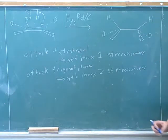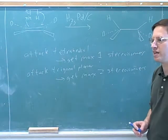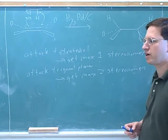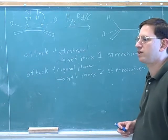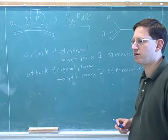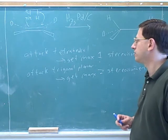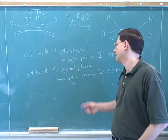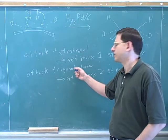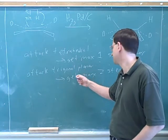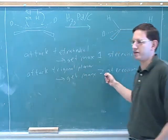We already saw that with substitution and elimination — in SN2, you're attacking a tetrahedral alpha carbon, so you only get one stereoisomer. You get the inverted stereoisomer. But in SN1, you're attacking a trigonal planar alpha carbon that's a carbocation, and then we get racemization, which means two stereoisomers.